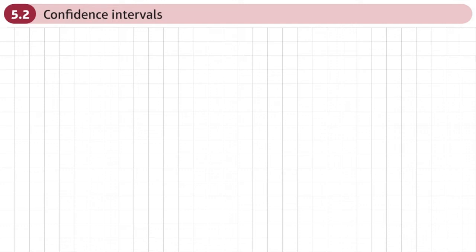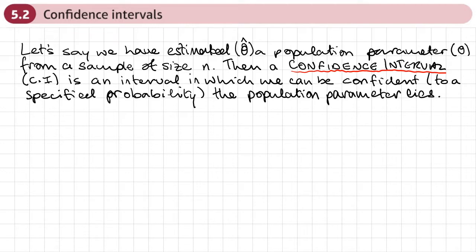This is the second section of chapter 5, and this section is on confidence intervals. So what is a confidence interval? Well, say we have estimated a population parameter from a sample of size n. Then a confidence interval, which we shorten to CI, is an interval in which we can be confident to a specified probability — that might be 90 percent, 95 percent, and so on — that the population parameter lies.